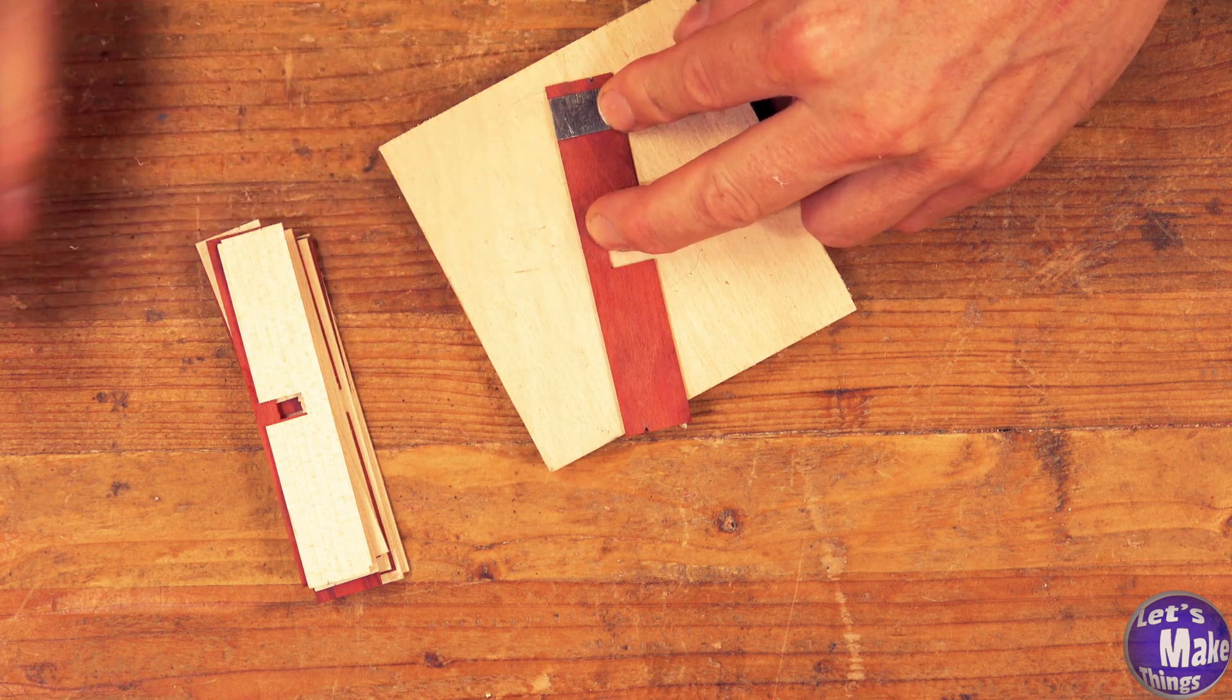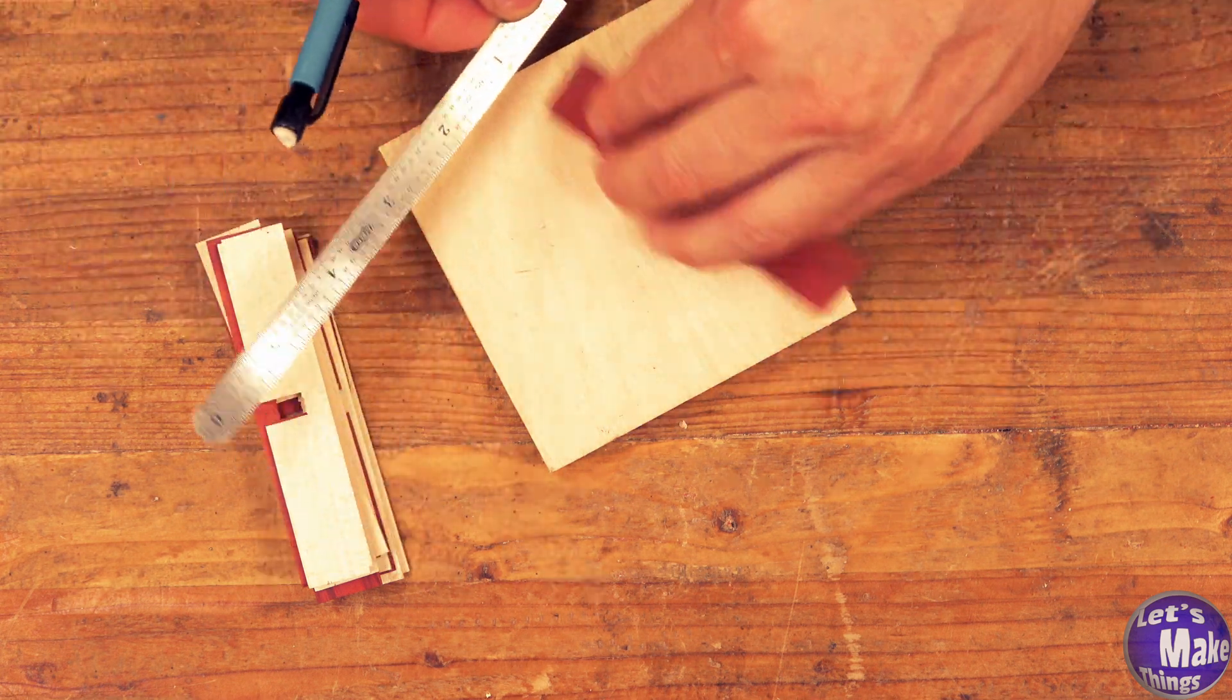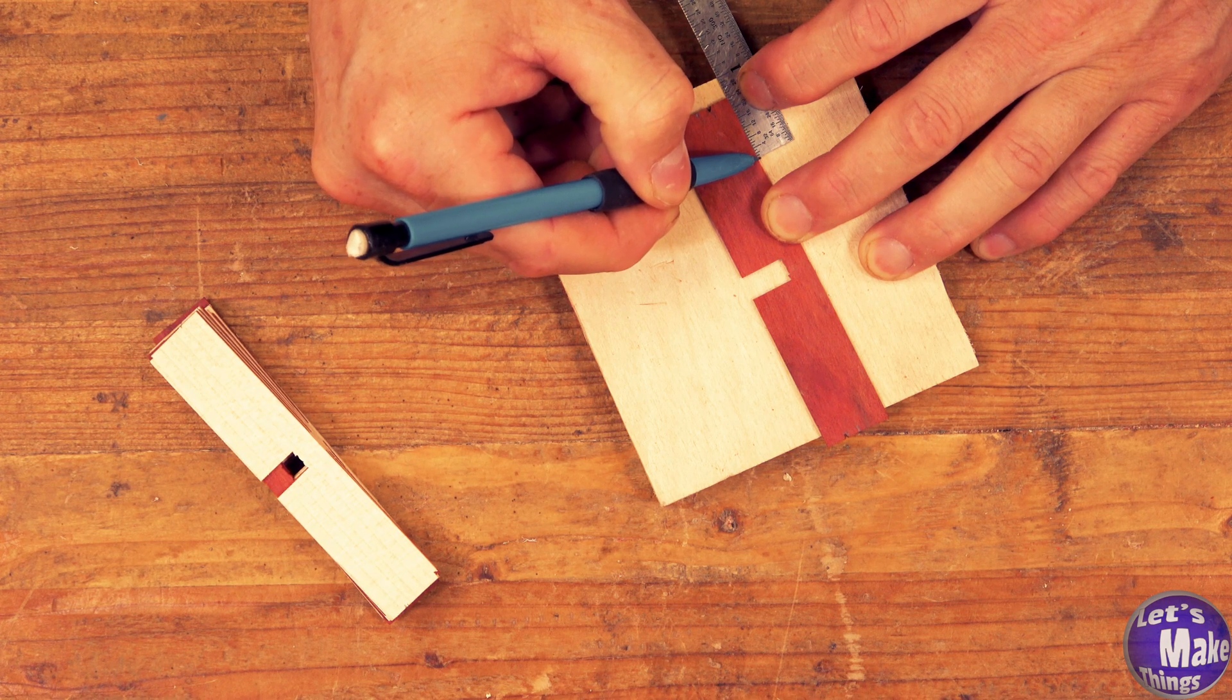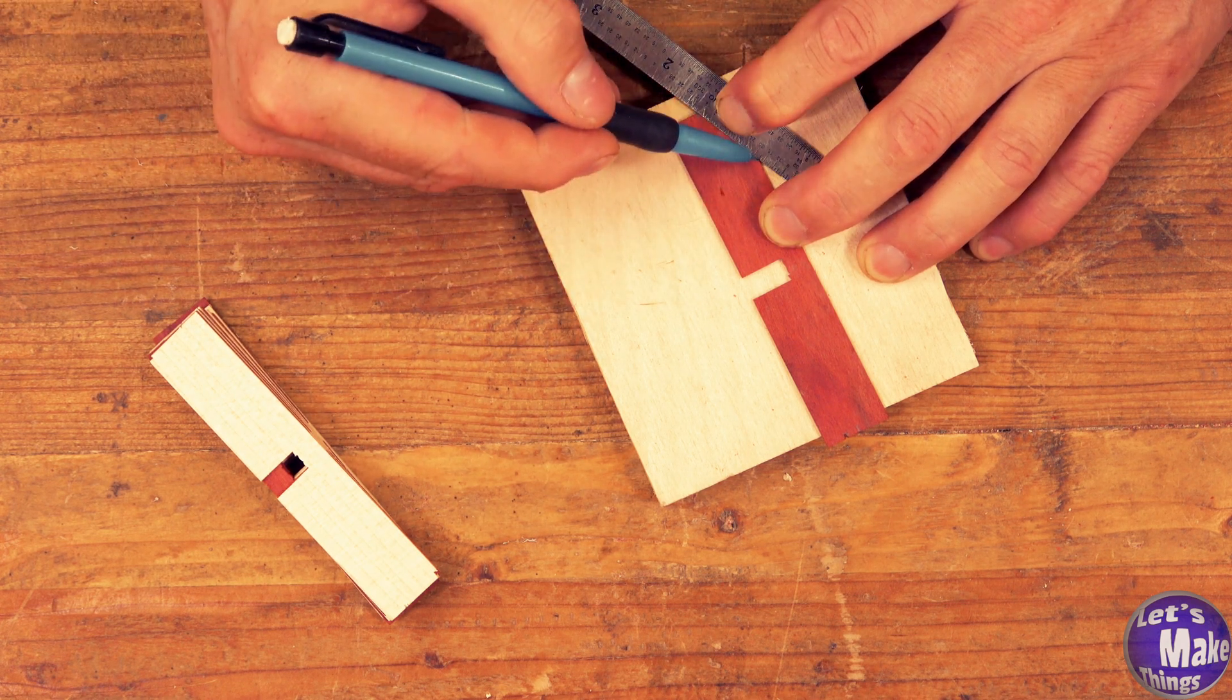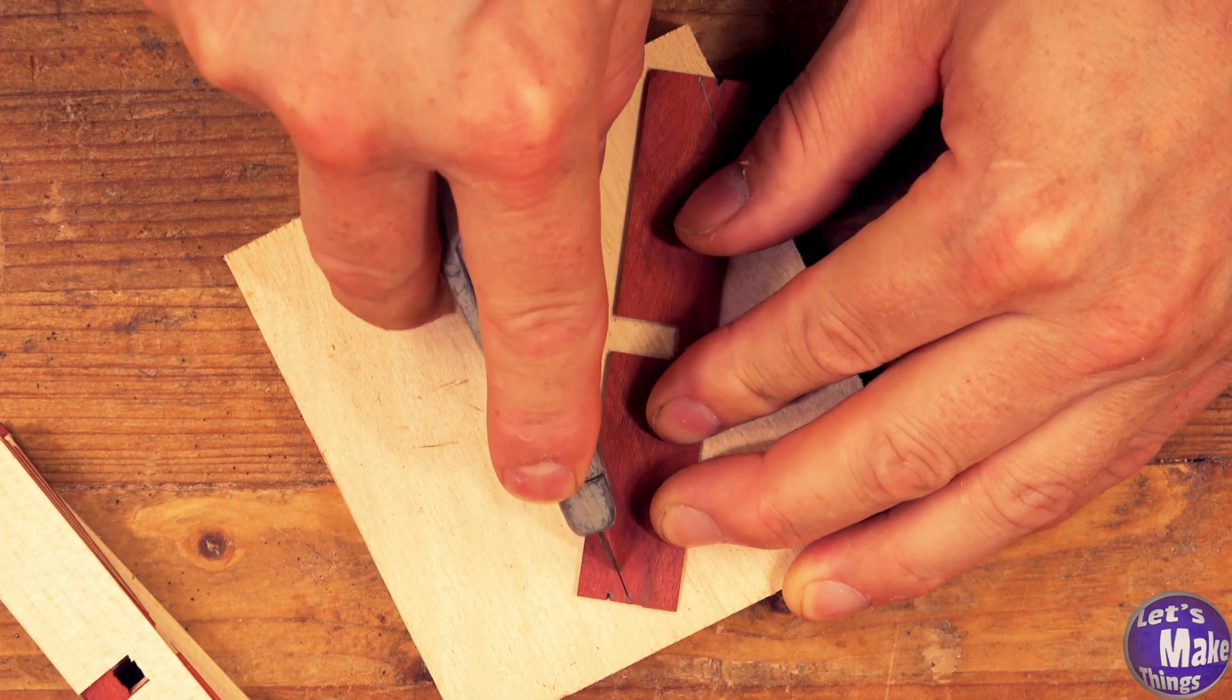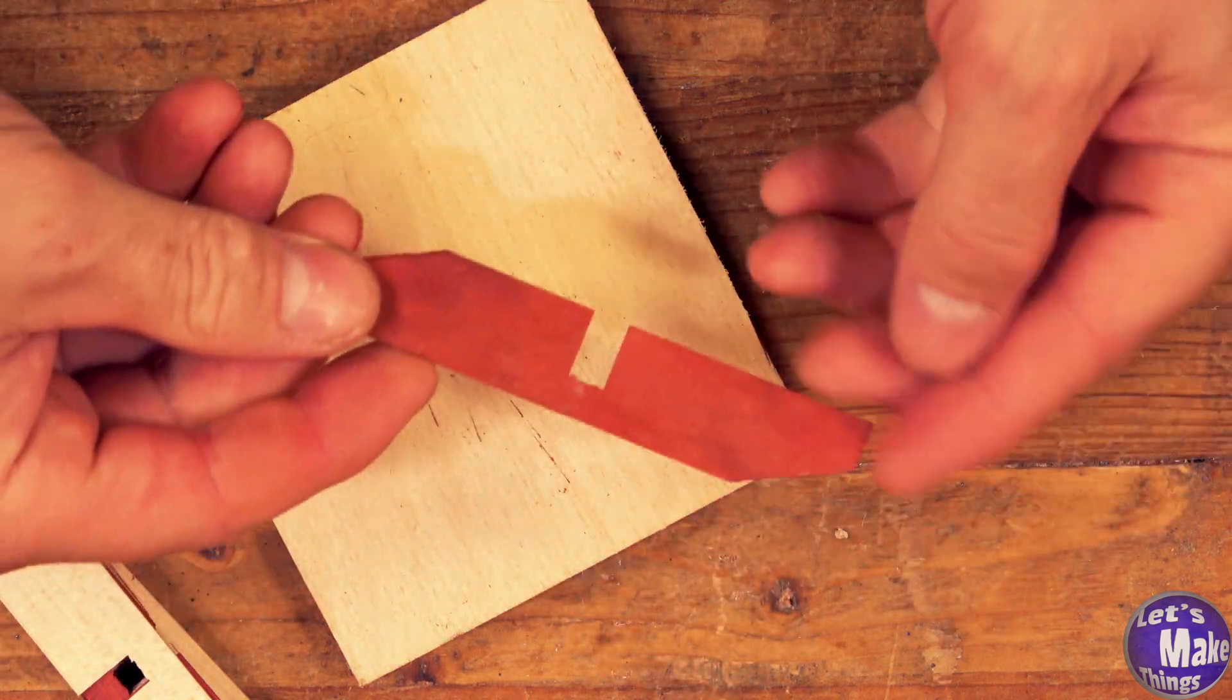We'll take our template now and we're going to measure over three eighths of an inch, which is going to be the half on both sides. On the side with the notch, we're going to measure up three quarters of an inch. And then we'll connect those two marks. Now we'll go ahead and cut along that line. This is the piece that will be at the very top.